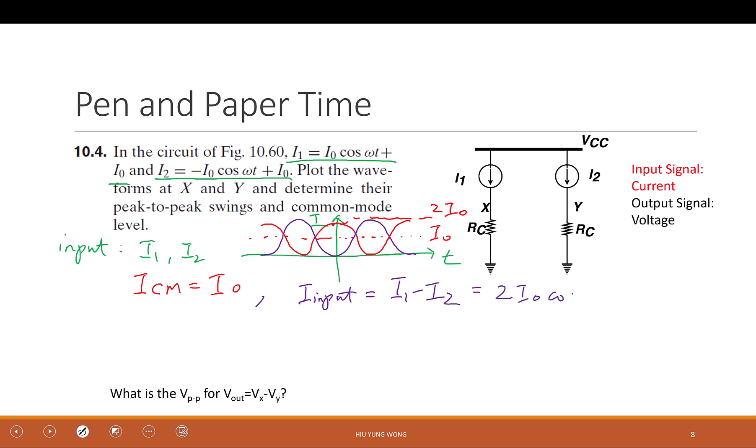I1 minus I2 equals 2I0 cosine omega t. So now you see that there's no offset, because we're talking about the differential. So the peak, the maximum, is 2I0. Because we only care about the peak, not the detail of the signal. That is the input.